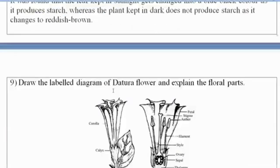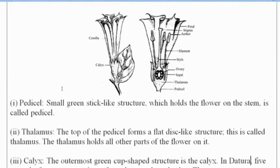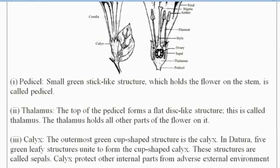Draw the labeled diagram of the datura flower and explain the floral parts. This is the datura flower and each part is explained. Have a glance at this answer, students.